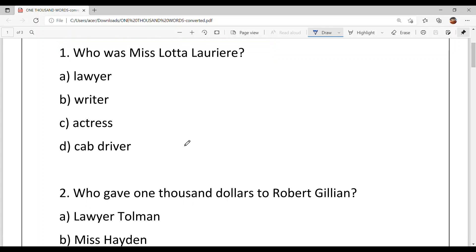So let's start. Question number 1, who was Miss Lotta Lauriere? A. Lawyer, B. Writer, C. Actress, D. Cab Driver. And option C is your answer, she was an actress.